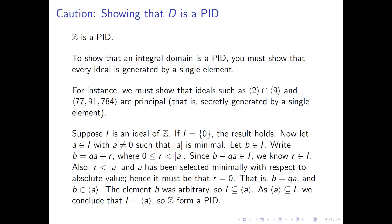Suppose I is an ideal of the integers. One case we need to consider is that I is just the trivial ideal, the set containing zero — this case is easy, as I is the ideal generated by zero. We may assume we've chosen an ideal with more than just the zero element. So the next step is to pick an element in the ideal that isn't zero, with an additional property: let's pick a non-zero element of the ideal that has minimal absolute value. My claim is that this element a is a generator for the ideal I.